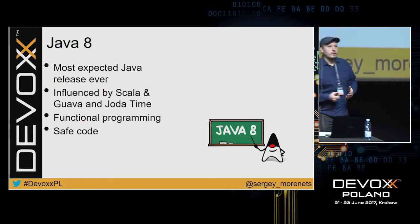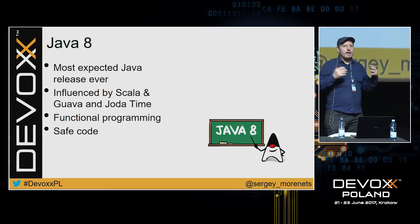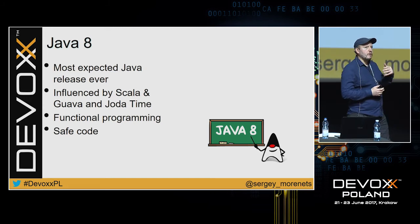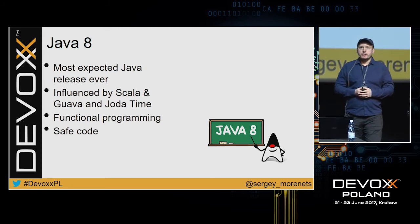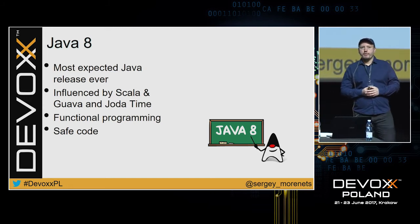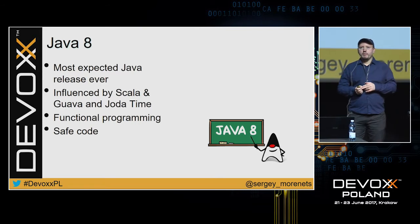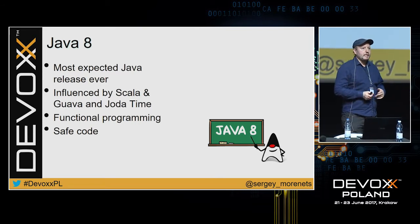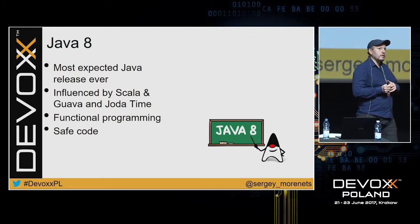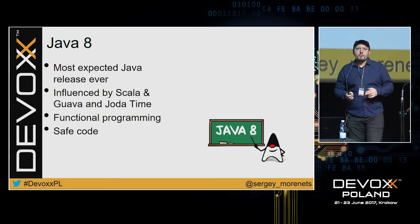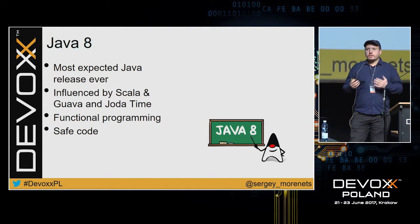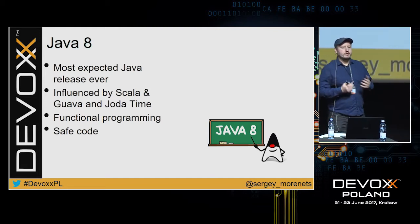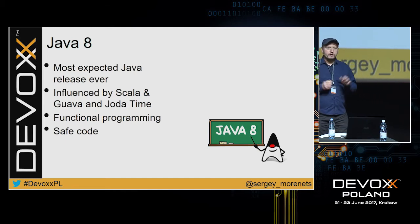So, Java 8. What is Java 8? Because of a lot of excellent features, it's one of the most expected Java releases ever. It was mainly inspired by Scala, by Google Guava, Joda-Time libraries. It reintroduced functional programming in Java with the intention to make our code more readable, more flexible, more efficient, and safer.